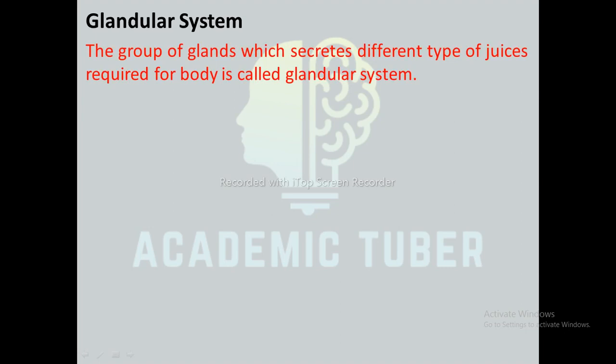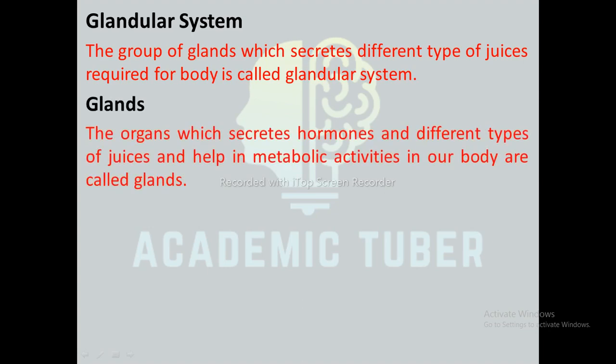A group of organs and tissues responsible for creating enzymes or hormones in the body is called the glandular system. The group of glands that secrete different types of juices required by the body is called the glandular system. There are three types of glands in the human body: endocrine glands, exocrine glands, and heterochrine glands.